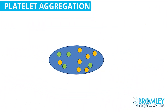Imagine here's a platelet. It's a sort of flat oval disc, and it has a number of granules in it. These are referred to as alpha granules and dense granules. The alpha granules are shown in orange and the dense granules in green. They contain a wide range of different chemicals important in cell communication, but we're really going to focus on two: ADP and thromboxane A2.